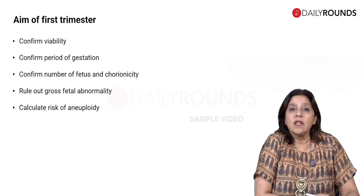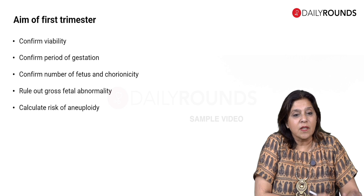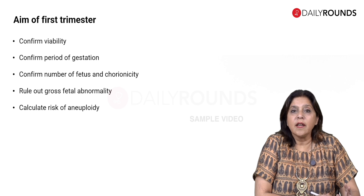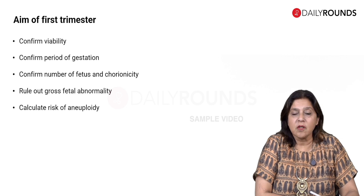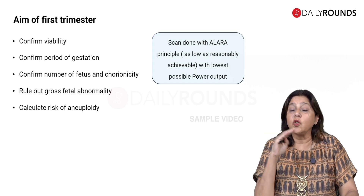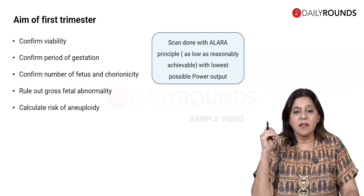Before we move on to CNS abnormalities, remember the basic principles of ultrasound. In the first trimester, make sure the fetus is viable and the gestation is correct — whatever the LMP period is, the gestation should correspond, or get a good CRL for gestational age. Confirm chorionicity if there are twins, give risks for aneuploidies, check for structural malformations beyond the brain, and keep the ALARA principle in mind — avoid increasing heat from the scan. Remember your thermal index and mechanical index.